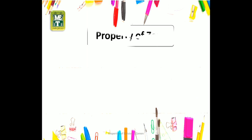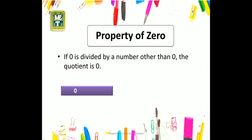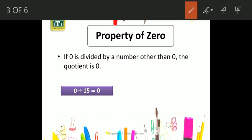Property of zero states that if zero is divided by a number other than zero, the quotient is zero. یعنی اگر ہم zero کو کسی بھی non-zero number سے divide کرتے ہیں تو ہمارا result یا quotient zero ہی ہوگا۔ Let's take an example: when we divide zero by 15, we get zero. یہاں پہ ہم نے zero کو 15 سے divide کیا، اور 15 ایک non-zero number ہے، تو ہمارا quotient zero آیا۔